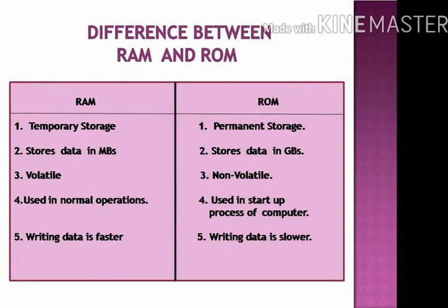The next slide contains the difference between RAM and ROM. RAM is a temporary storage, but ROM is a permanent storage. RAM stores data in MBs, ROM stores data in GBs. RAM is volatile, ROM is non-volatile in nature. RAM is used in normal operations, ROM is used in the startup process of the computer. In RAM, writing data is faster, but in ROM, writing data is slower.